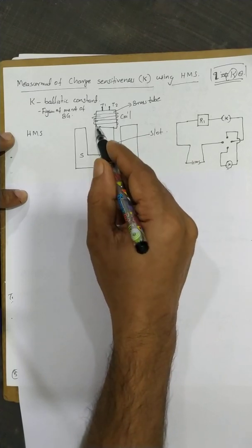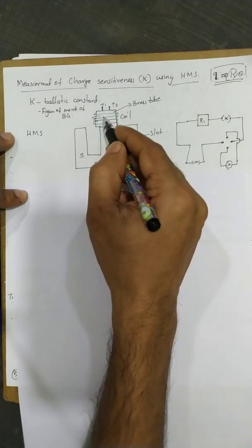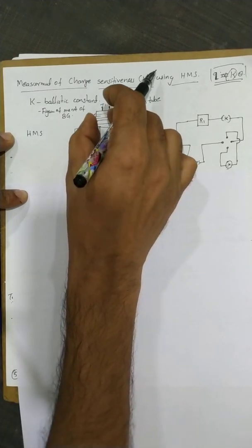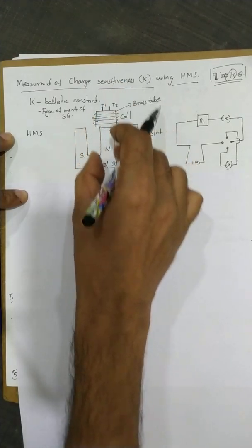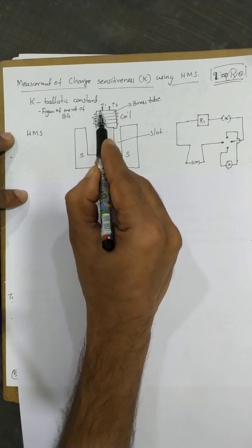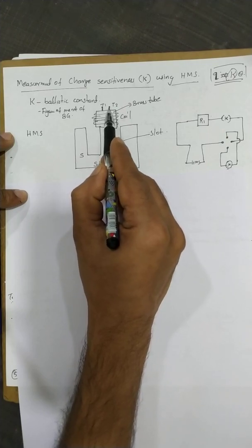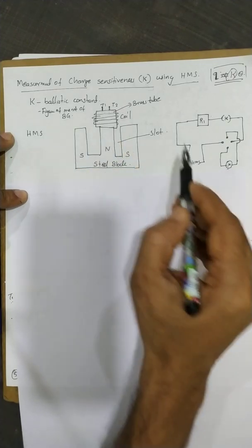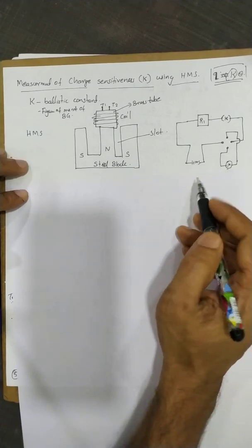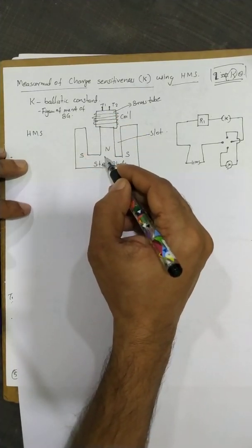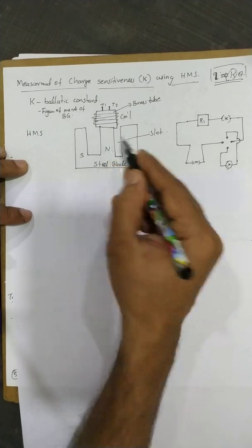We can measure the fixed height. This coil sits in a slot. There is a flux through the coil. When the coil is withdrawn, an induced EMF is produced, which causes an induced current. This current flows through the ballistic galvanometer and represents a standard value.